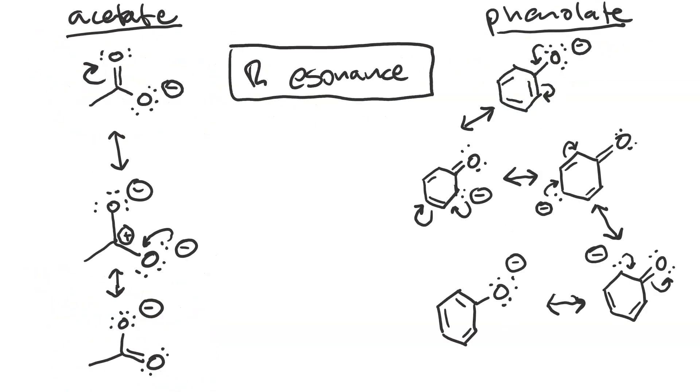By contrast, phenylate has five resonance structures. Three of them involve having a carb anion in the ring, and two of them involve an oxyanion. Hence, all are pretty stable. So it is very safe to say that phenylate is more stabilized by resonance than acetate is.